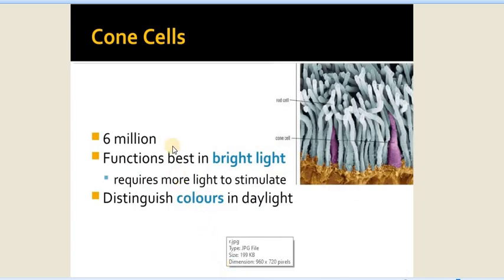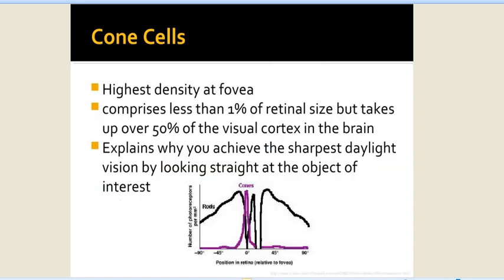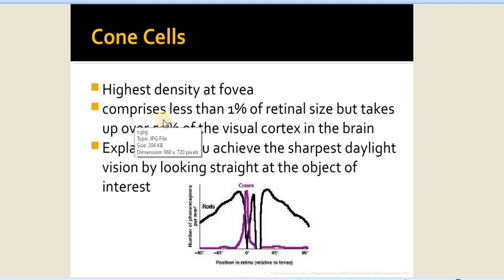The cone cells are about 6 million. Their function is better in bright light; they require more light to stimulate. They distinguish colors in daylight. Their highest density is at the fovea, the center. They contain less than 1% of the retinal sites, but take up over 50% of the visual cortex in the brain. So in daylight we have the sharpest vision.